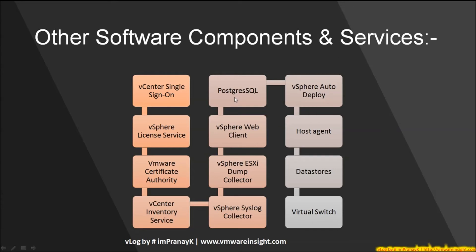PostgreSQL is basically a database — when we install vCenter Server, it stores all the files to this database. It's the default database which vCenter 6.5 uses. The Web Client is used to access the vSphere environment; you can manage multiple ESXi hosts, datastores, and networks from the vSphere client. There are other kinds of clients also, like the HTML client and vSphere client. vSphere ESXi Dump Collector allows us to configure ESXi to save VM kernel memory to a network server rather than to a disk.